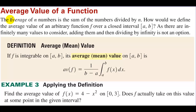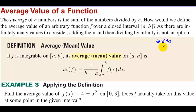Average value of a function. The average of n numbers is the sum of the numbers divided by n. How would we define the average value of an arbitrary function f over a closed interval [a, b]? For example, if 3 people took a quiz and scored 80, 85, and 90, the average is 85 — you add them up and divide by 3.